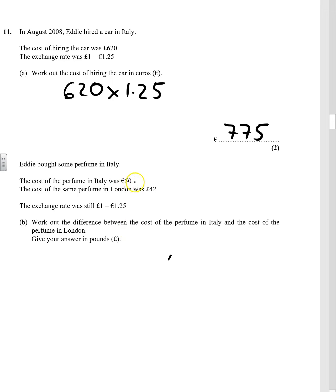It makes more sense to change the €50 into pounds. Now we're going back from euros into pounds, so we need to divide. We do 50 divided by 1.25, which gives us £40.